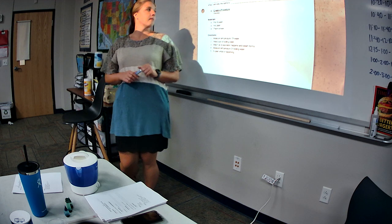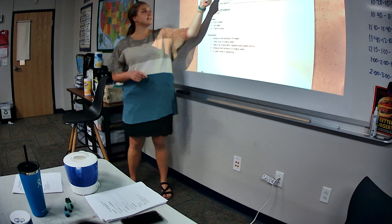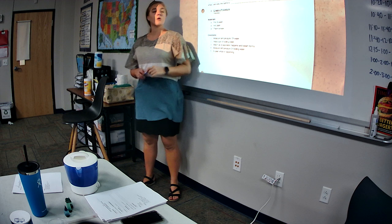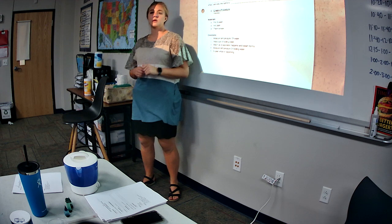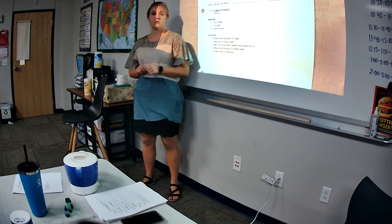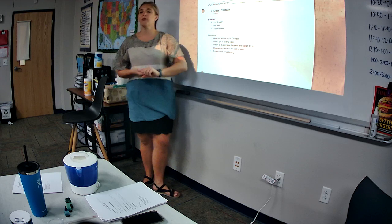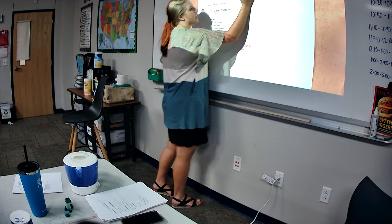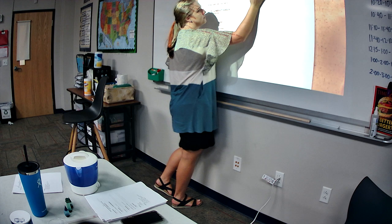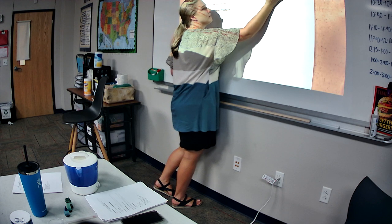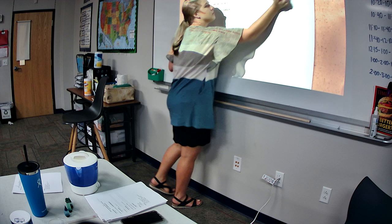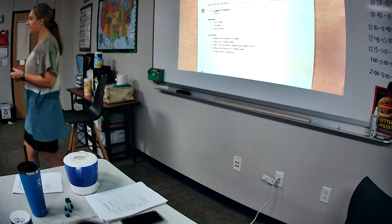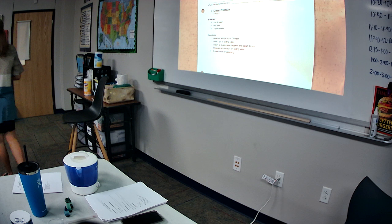Variables. So number three, identify variables. As I experiment, I will be changing the temperature of the water. That's what we're going to change. We're going to heat up the water and see if we can make evaporation happen.